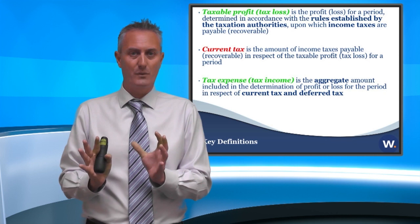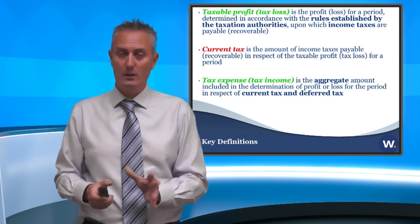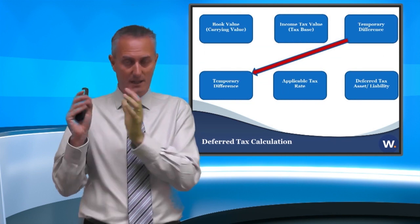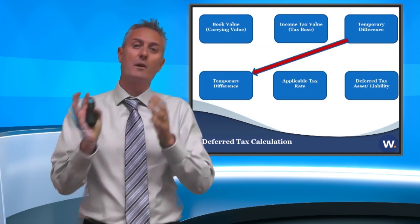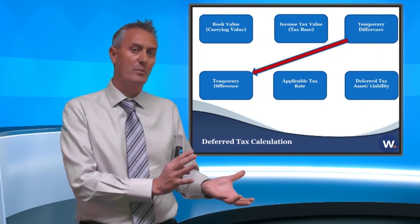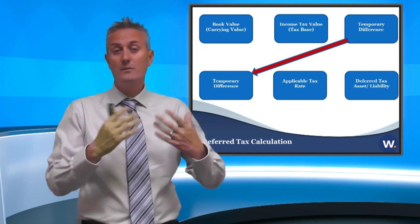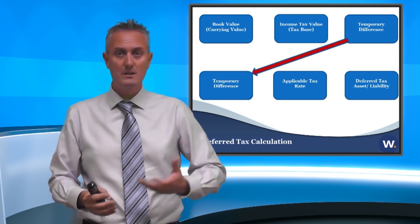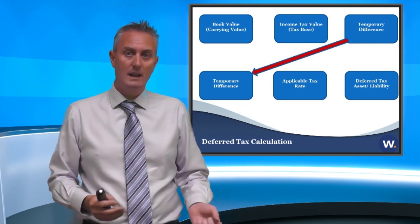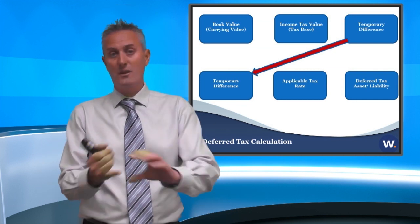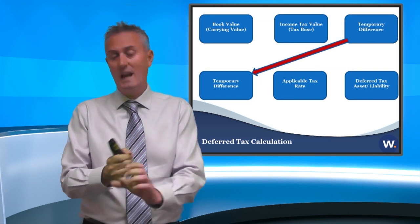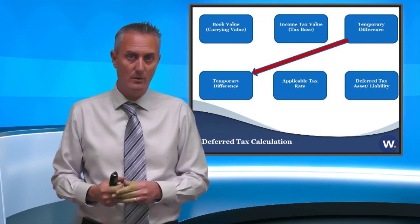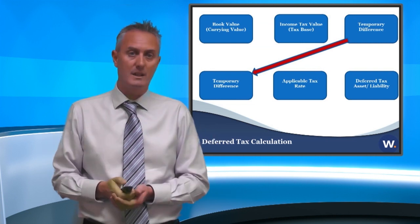Deferred tax is a little bit different because deferred tax does give you a calculation. You take the carrying amount of an asset, deduct from it the tax base to get a temporary difference, then multiply that by either the usage or the capital gains rate to give us our deferred tax. In that calculation, things like the tax base and the tax rates are determined by your local tax law, but the rest of it is determined under IAS 12.